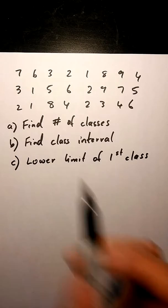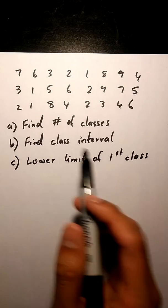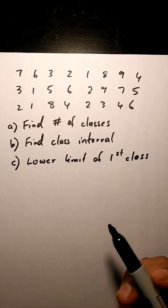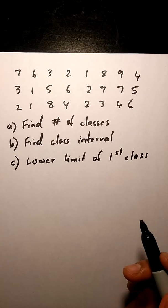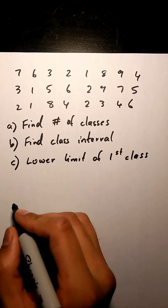Okay, so in this example here we are given a set of data points. We need to find the number of classes, the class interval, and the lower limit of our first class. First thing we need to do is...